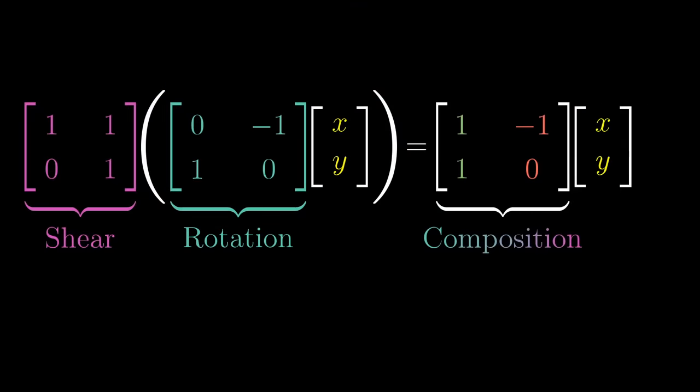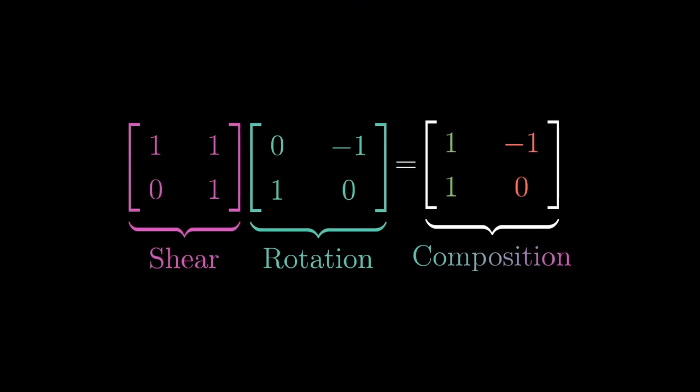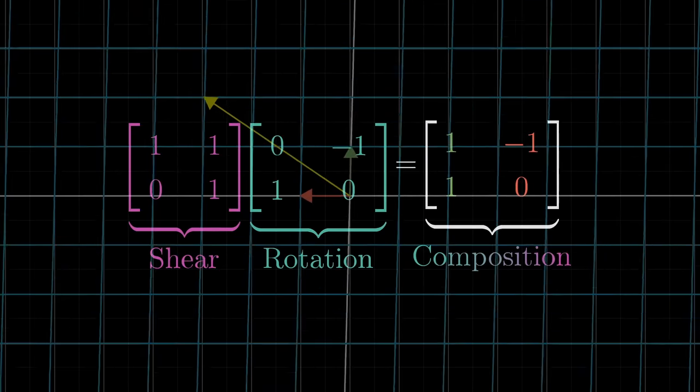Based on how things are written down here, I think it's reasonable to call this new matrix the product of the original two matrices, don't you? We can think about how to compute that product more generally in just a moment, but it's way too easy to get lost in the forest of numbers. Always remember that multiplying two matrices like this has the geometric meaning of applying one transformation, then another.